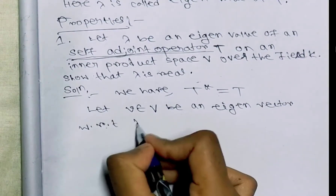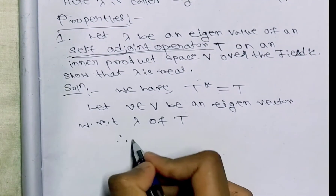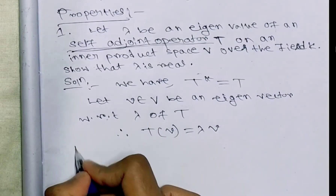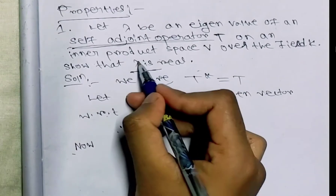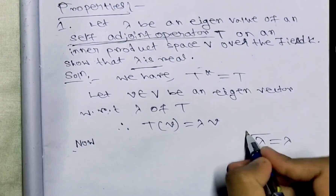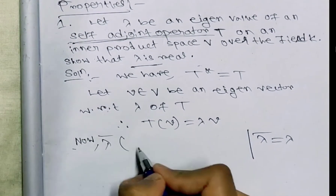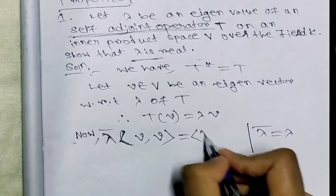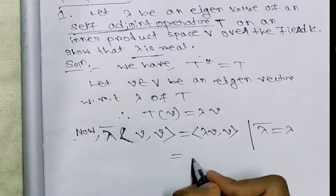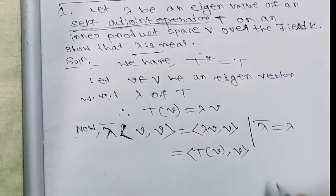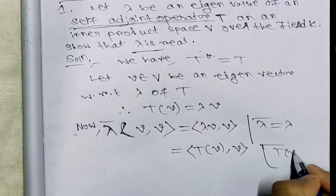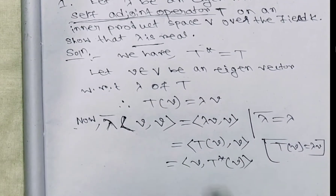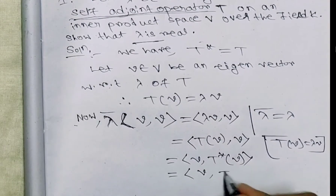Let v belonging to V be an eigenvector with respect to lambda of T. Therefore by the definition of eigenvalue and eigenvector, T(v) equals lambda·v. To prove lambda is real, we have to show that lambda-bar equals lambda. So lambda-bar times <v,v> equals <lambda·v, v> equals <T(v), v>, which equals <v, T*(v)> equals <v, T(v)>.